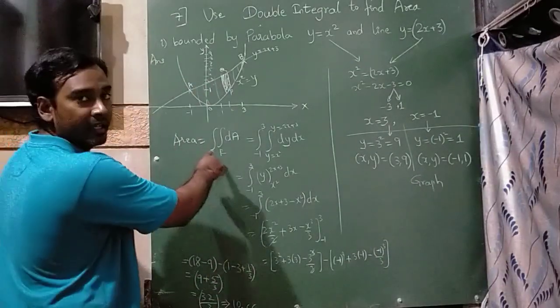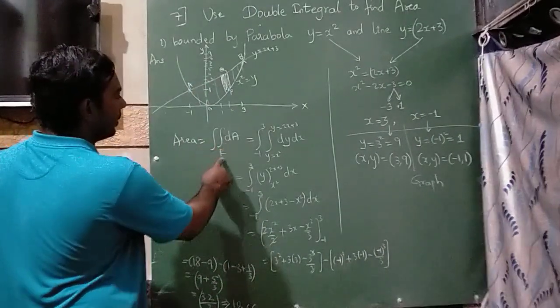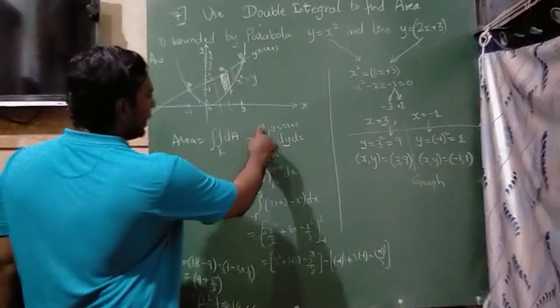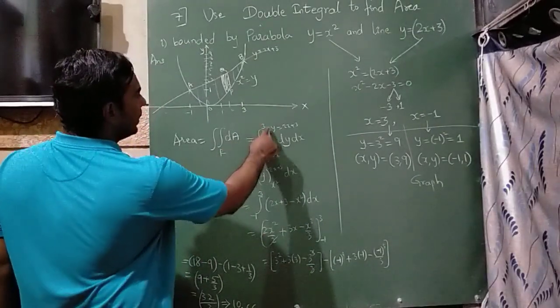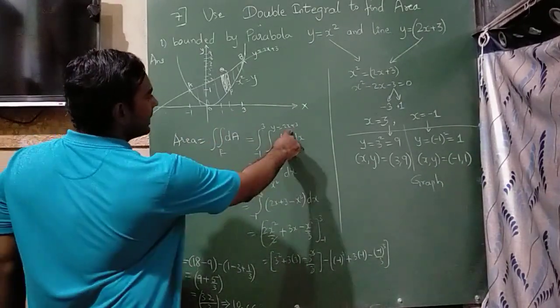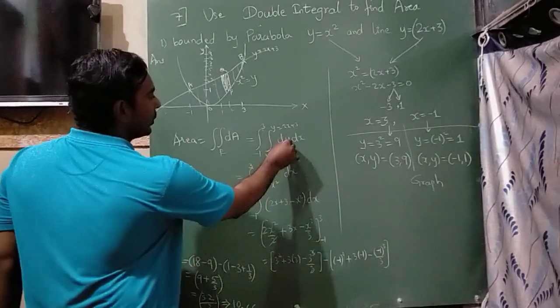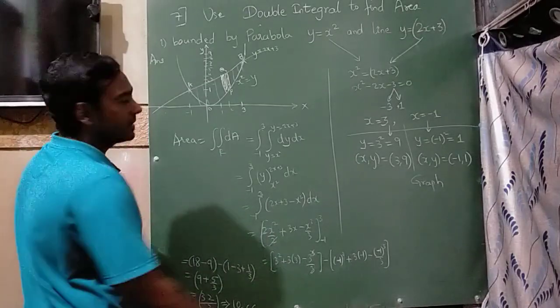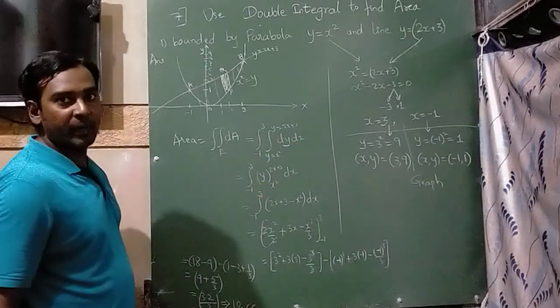Now area is equal to double integration of dA. So first time here I have written from minus 1 to 3, from minus 1 to 3. And here parabola and this is the line. First time I'm going to integrate with respect to y. In second time I'm going to integrate with respect to x.